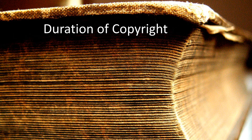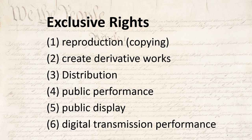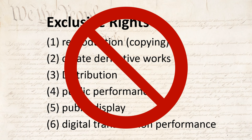A copyright lasts for a certain amount of time, depending on when the work was created. It can last up to 70 years after the creator's death. After that, the work goes into the public domain. Currently, anything created before 1923 is in the public domain, meaning all of these rights have expired and anyone can use the work in any way they want.